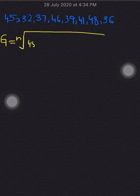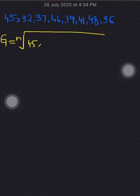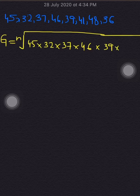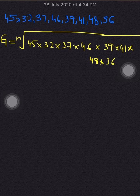The formula for the geometric mean in this case is G equals the nth root of x1 times x2 up to xn. Here x1 equals 45, x2 equals 32, and x9 equals 39. So I can write it as G equals the 9th root of 45 × 32 × 37 × 46 × 39 × 41 × 46 × 36.